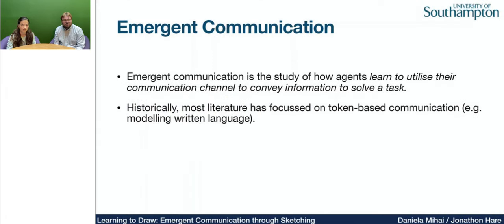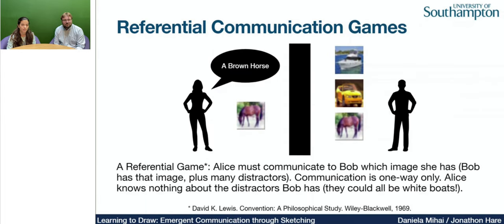What is emergent communication? It is the study of how agents learn to communicate in order to collaboratively solve a task. Previous research in this space has focused on token-based communication, to some extent trying to model written language. Referential communication games have been used as a playground for studying emergent communication. In a referential communication game, agents communicate by referring to an object or an action.